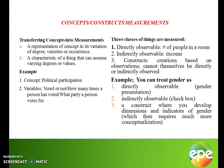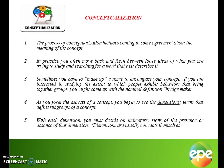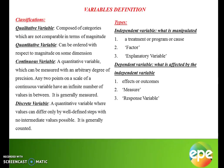The process of conceptualization includes coming to some agreement about the meaning of the concepts we've talked about. In practice, you move back and forth between ideas trying to understand what you are studying and searching for what describes it aptly. As you find the aspects of a concept in your thesis, you begin to see the dimensions. With each dimension, you must decide on indicators — signs of the presence or absence of that dimension.